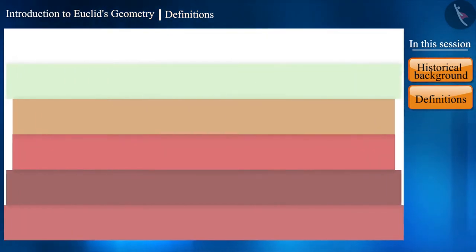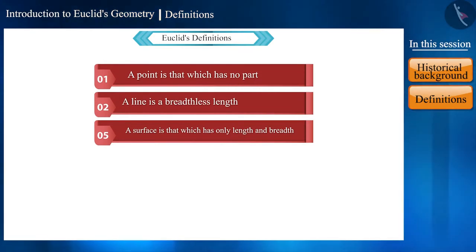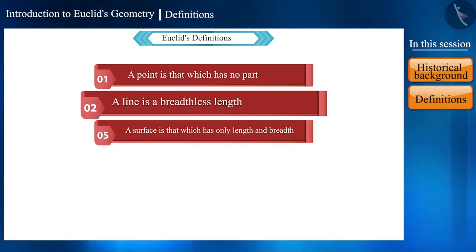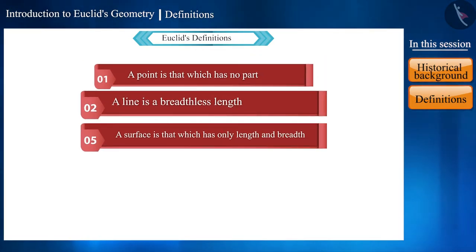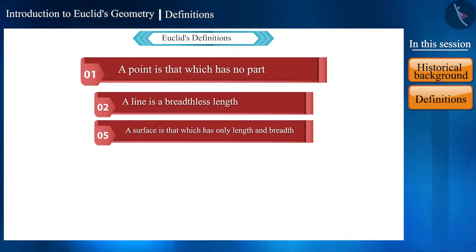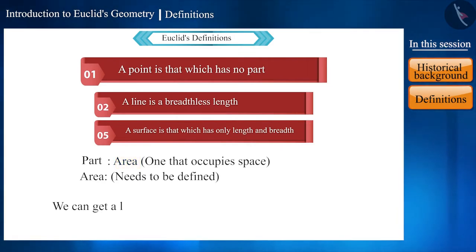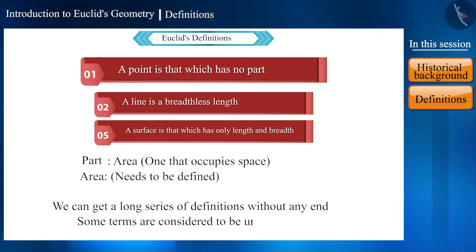Friends, there is a need to define several terms in the definitions given by Euclid, such as area in the first definition, length and breadth in the second and fifth definitions. If in the first definition we define an area by the space it occupies, then we will need to define space as well. Similarly, we get a long series of definitions without any end. For this reason, mathematicians considered some terms in geometry as undefined.